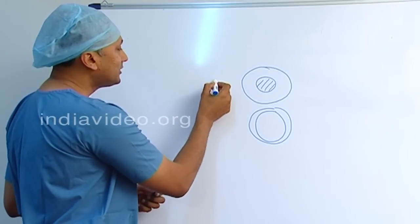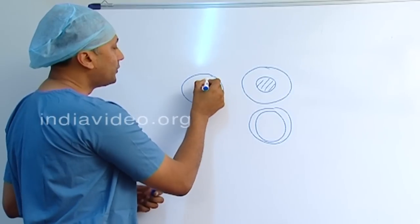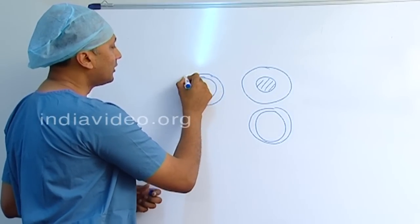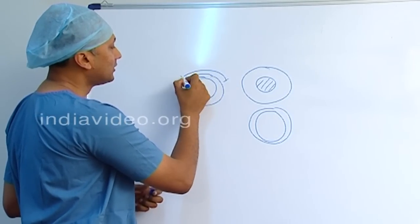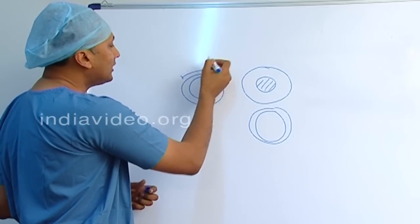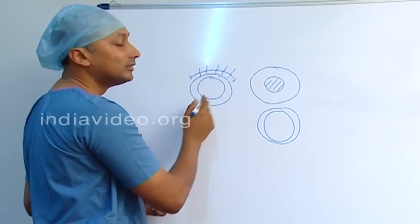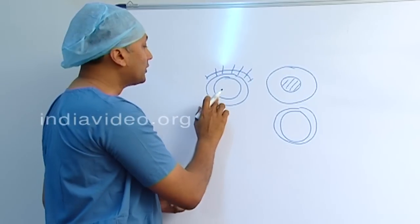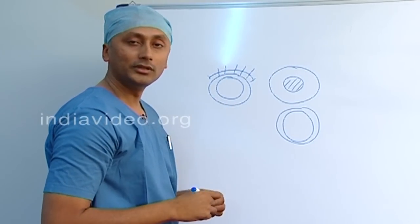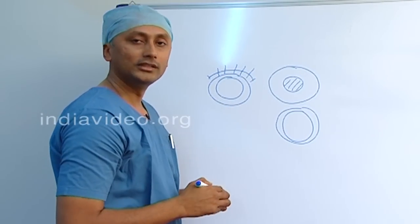What was done in older ages is we used to place a large incision, almost 10 millimeters on top of the cornea, take out the lens and put sutures. This is not done anymore because such a person has to rest for 3 months and they cannot do any other daily activities.